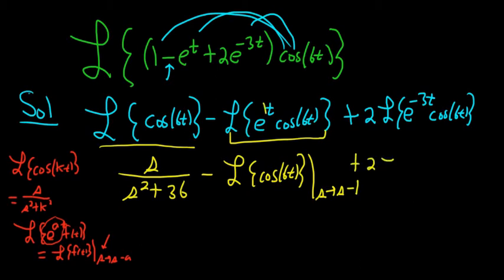Plus 2, Laplace, cosine 6t. Again, dropping the e. And the e turns into a shift. So here it's s to s, and it's s minus negative 3, so it turns into a plus 3.